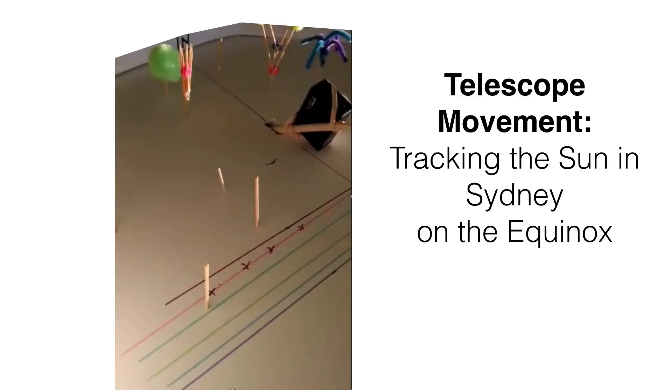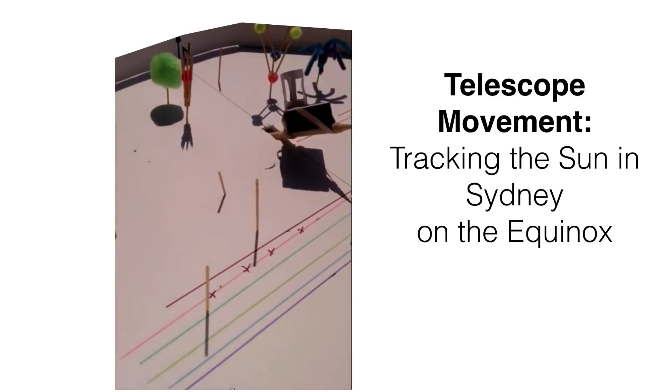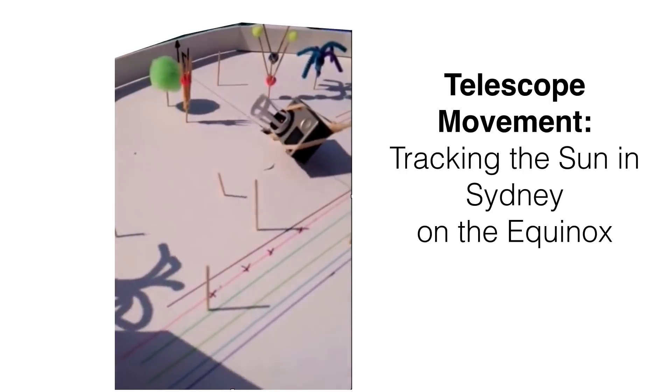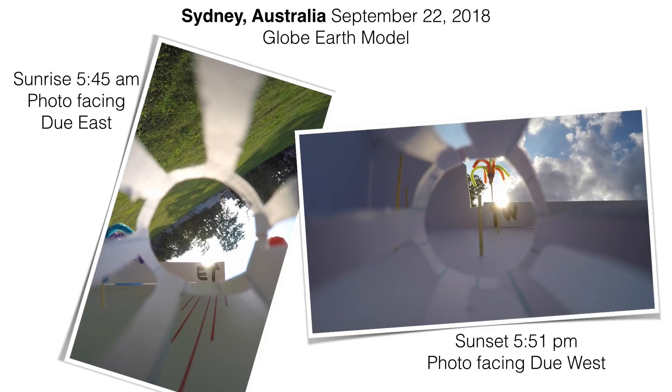From a bird's-eye view, it does appear that the telescope is tracking the sun — you can see by the shadows where the sun is, and the telescope does look like it's tracking the sun on the equinox. Footage from the actual telescope — a different take — shows it tracking the sun very nicely, with sunset due west. Two photos taken at the moment of sunrise and sunset show it did a pretty decent job of tracking the sun on the equinox for the globe model.